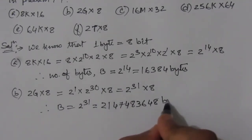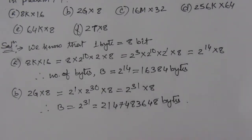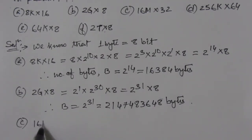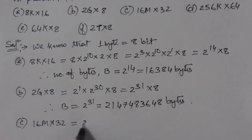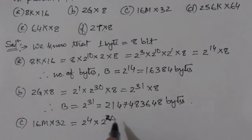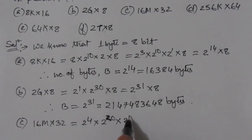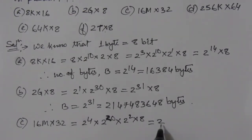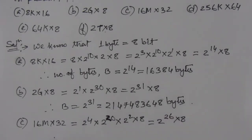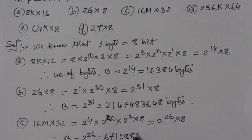In part c, we have 16M × 32. Here 16 = 2^4, M = 2^20, and 32 = 2^5, so we have 2^(4+20+2) × 8 = 2^26 × 8 bits. Therefore, B = 2^26 = 67,108,864 bytes.